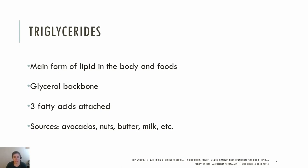A monoglyceride contains glycerol with one fatty acid attached and a diglyceride would have two attached. Besides foods, we can also make triglycerides in our body from excess carbohydrates, fats, or proteins. Your body changes these extra calories into triglycerides and stores them in fat cells.